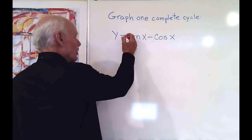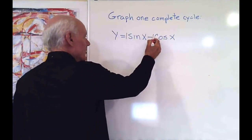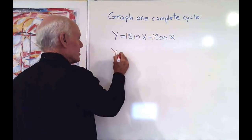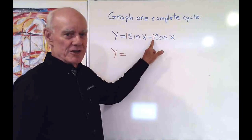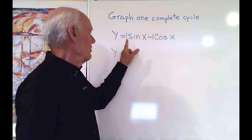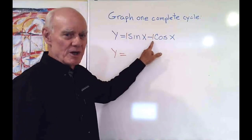So what I'm going to do is look at the coefficients. They're each one. And then I'm going to rewrite this as the square root of the sum of the squares of these two coefficients. So I'm going to rewrite it as the square root of one squared plus one squared.